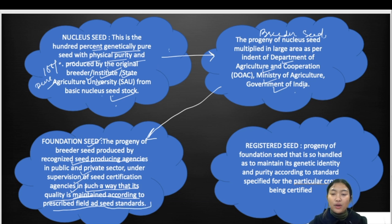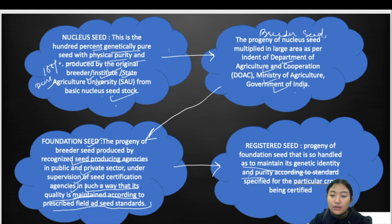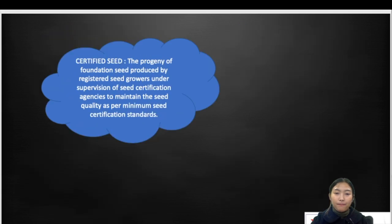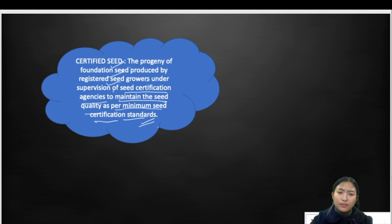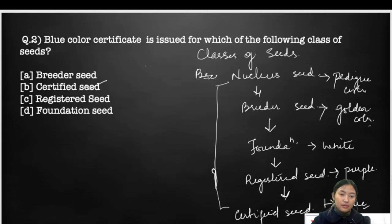Foundation seeds are maintained to ensure quality according to prescribed field and seed standards. Registered seeds are the progeny of foundation seeds and are handled to maintain genetic identity and purity according to standards specified for the particular crop being certified. Certified seeds are also the progeny of foundation seeds and are produced by registered seed growers under supervision of seed certification agencies to maintain quality as per minimum seed certification standards. Questions may come based on the color of the tags or the genetic purity.